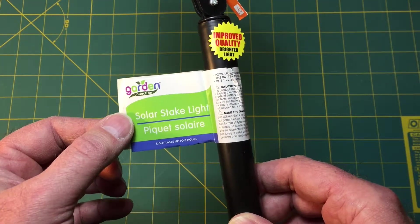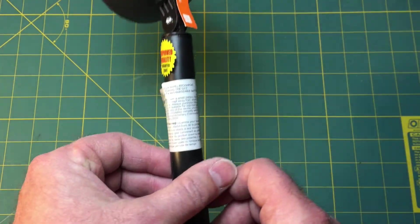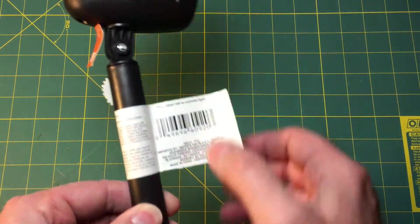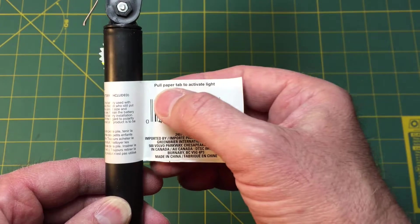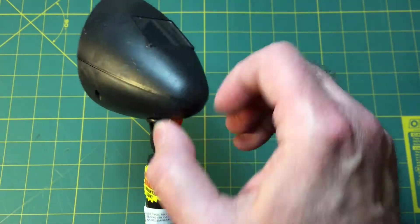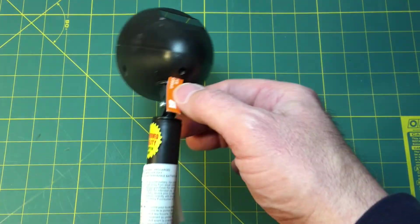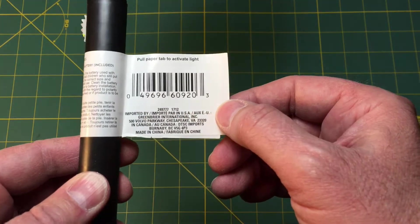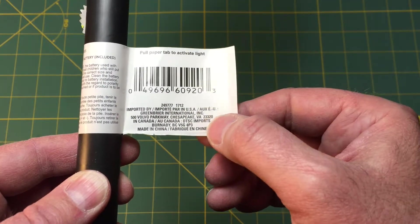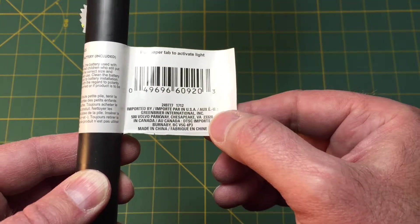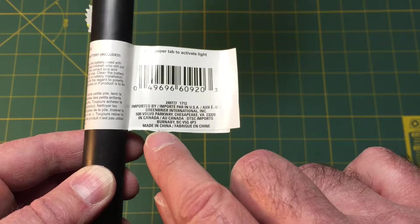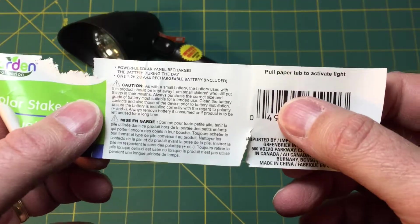This says Garden Collection and it says light lasts up to eight hours, which is something I may have to find out for myself and maybe do a follow-up video. Up here it says improved quality brighter light. On the other side it says pull paper tab to activate light, so there's a cardboard tab in here that would prevent the light from turning on in the store or warehouse. It says imported by Greenbrier International Chesapeake Virginia, and of course like 90% of everything else you find in a dollar store it's made in China.